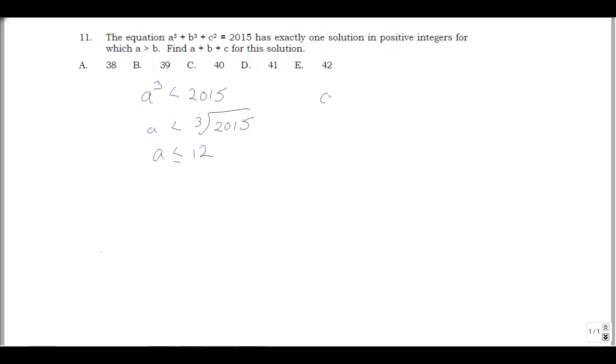What I'm going to do, maybe before I put this into an equation, is a cubed plus b cubed plus c squared equals 2015. Let's solve for one of these values. How about let's solve for c. So c squared is 2015 minus a cubed minus b cubed.